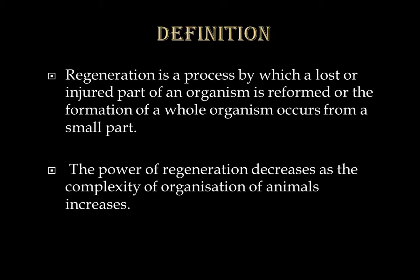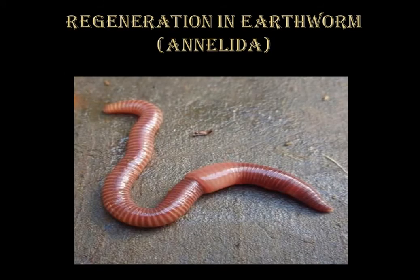For example, if we consider a lowly evolved animal such as a bath sponge and squeeze it into fragments, from each piece an entire sponge colony can be developed within a month or a year. But in highly evolved animals such as Chordata or human beings, the power of regeneration decreases and is restricted to regeneration of certain organs within the body, such as skin and liver. We'll now consider regeneration with respect to the earthworm, which belongs to phylum Annelida and class Oligochaeta.